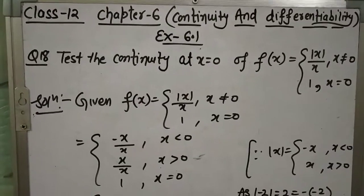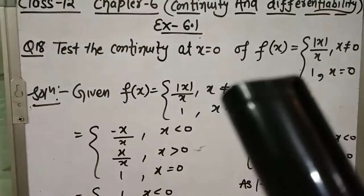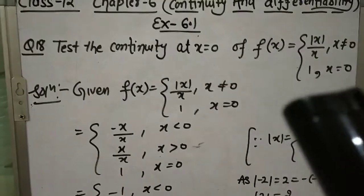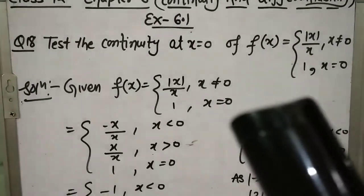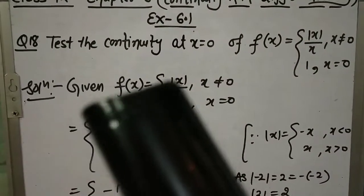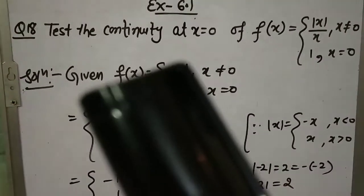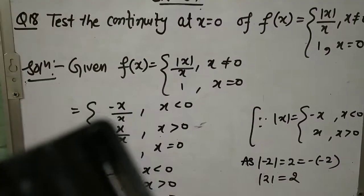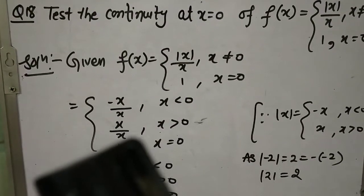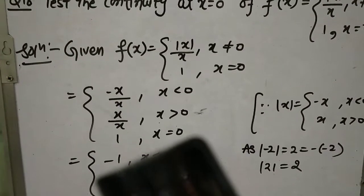Question number 18: Test the continuity at x = 0 of f(x): |x|/x when x ≠ 0, and 1 when x = 0. x = 0 पर इस function की continuity check करनी है। Given function: |x|/x for x ≠ 0, and 1 for x = 0।